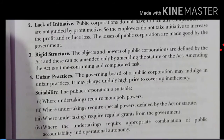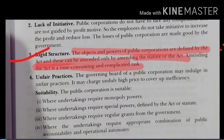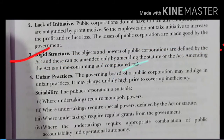The third demerit is rigid structure. The objectives and powers of the public corporation as defined by the act can be amended only by an amending statute, and amending an act is a time-consuming and complicated task. Therefore the structure remains constant when no further amendment takes place, making it inflexible.